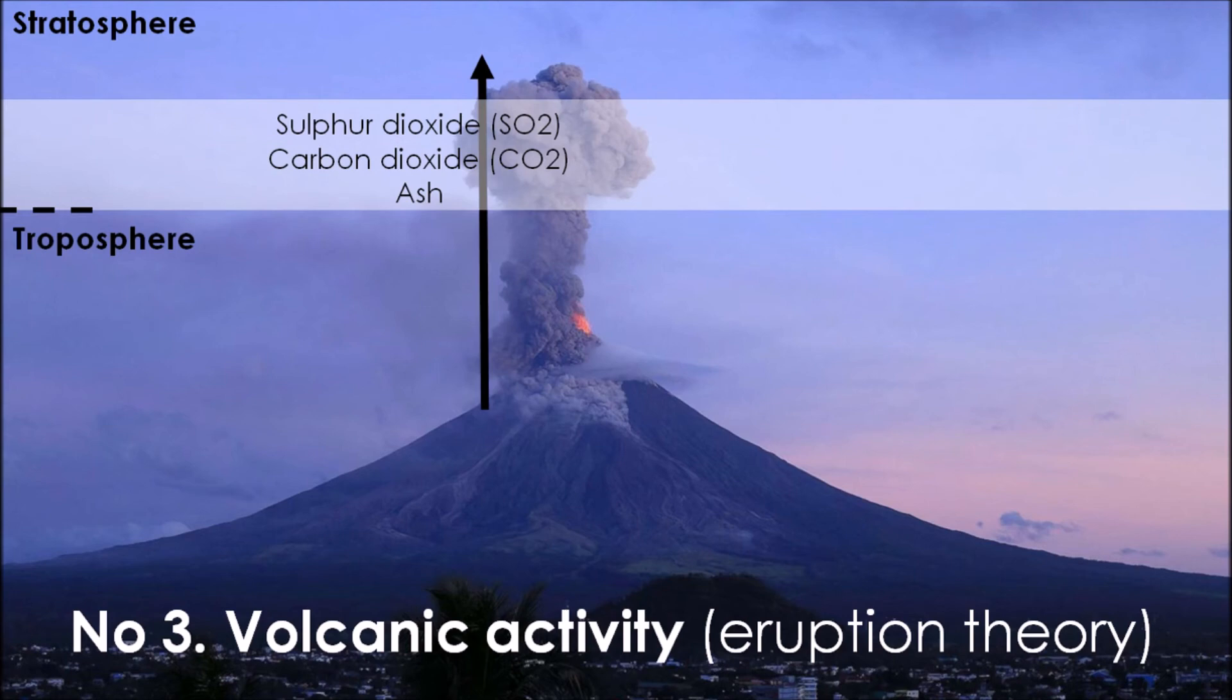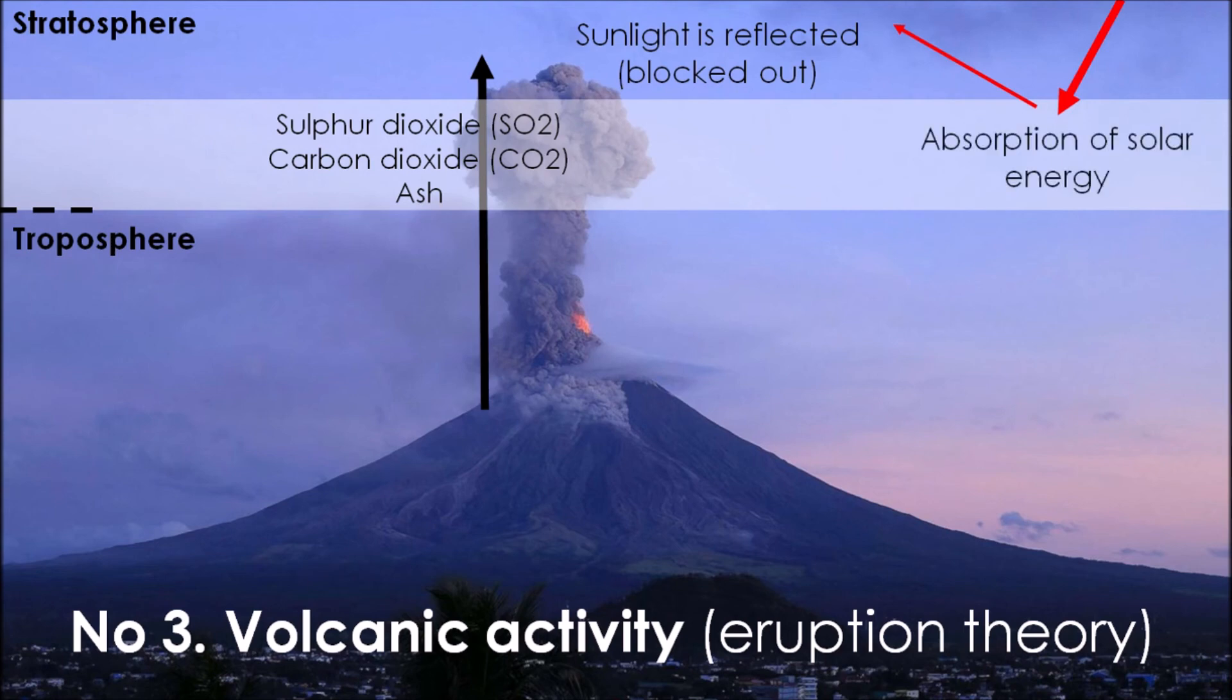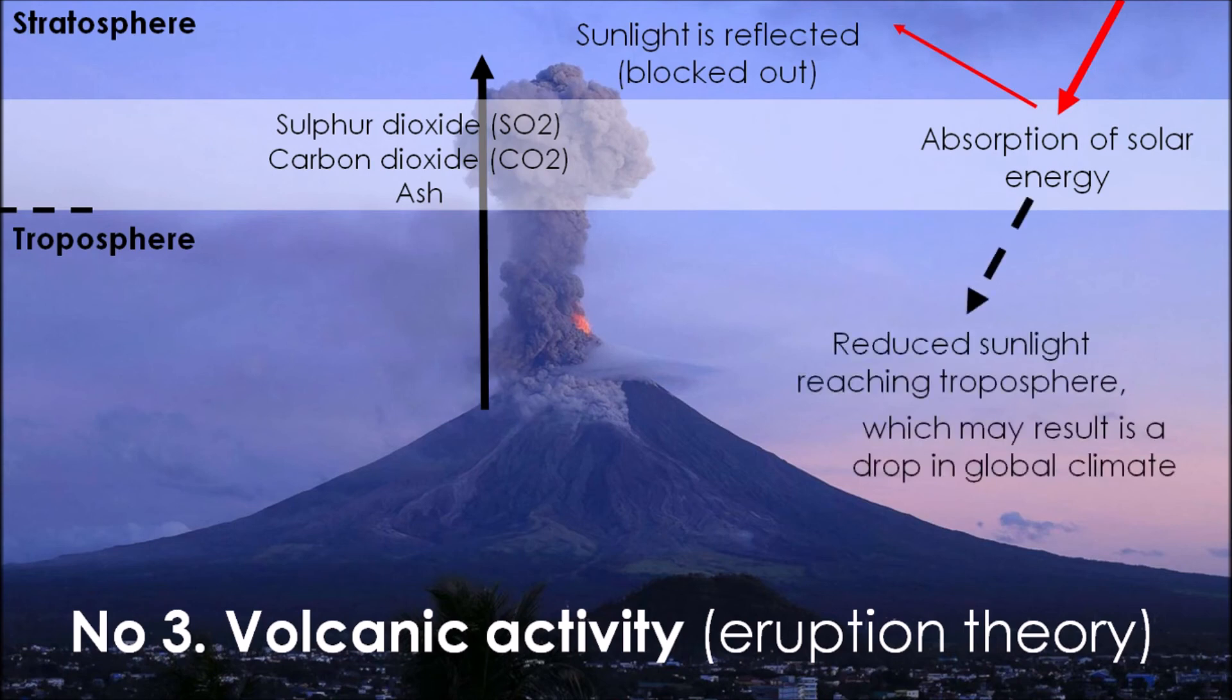This blanket of ash and gas will then prevent sunlight or solar radiation reaching the Earth's surface, and instead will reflect, block it out or refract it back into space, cooling our planet. Some of the solar radiation is absorbed by these gases and ash, but we have still a reduced amount of sunlight and solar radiation reaching the troposphere, which eventually results in a drop in global climate.